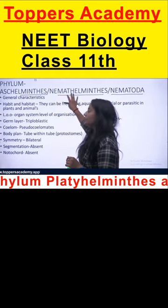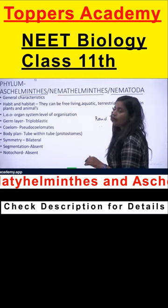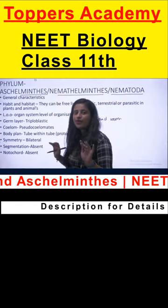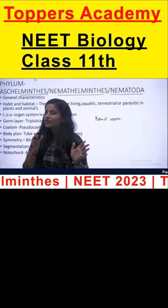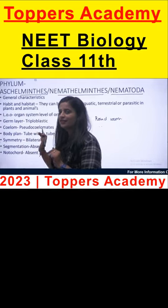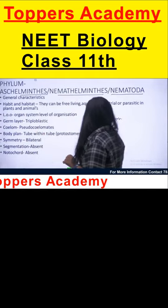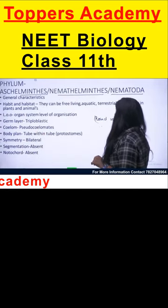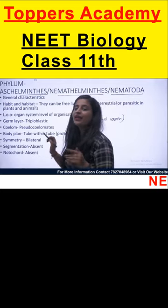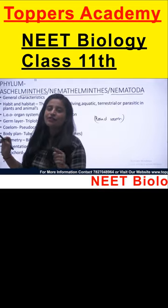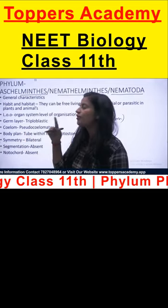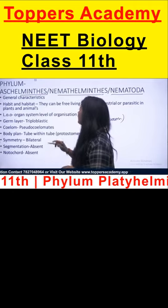Aschelminthes, Nemathelminthes, and Nematoda are all the same names — just like a child has different nicknames. On the basis of their internal physiology, when we dissect them and see them, they have a round appearance.